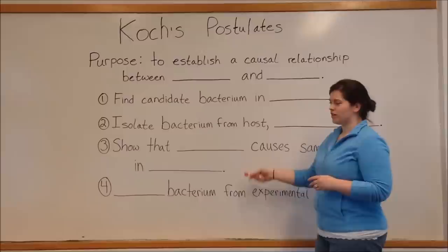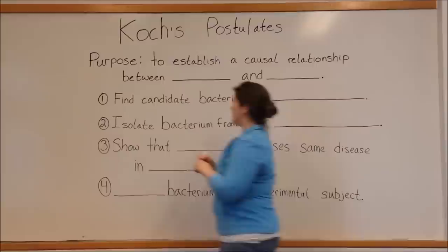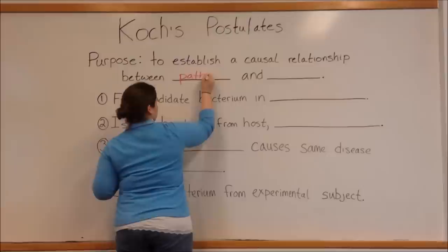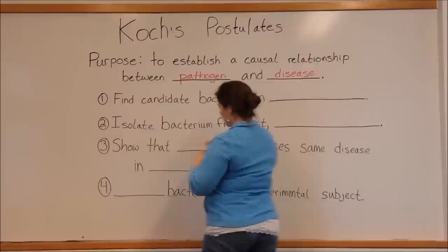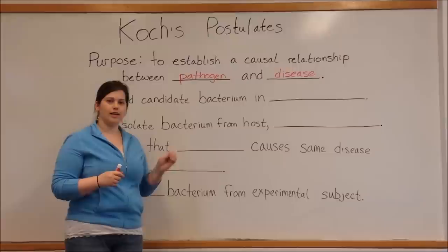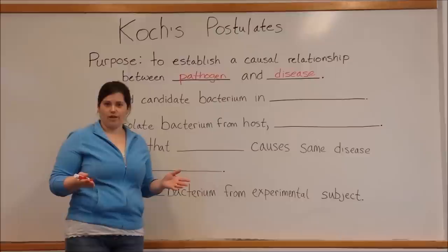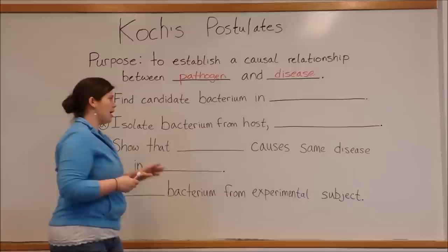Koch's postulates are a set of four criteria that establish a causal relationship between two things — specifically, between a pathogen and a disease. Basically, these four criteria help determine that a specific bacterium, for example Bacillus anthracis, causes a specific disease, for example anthrax.